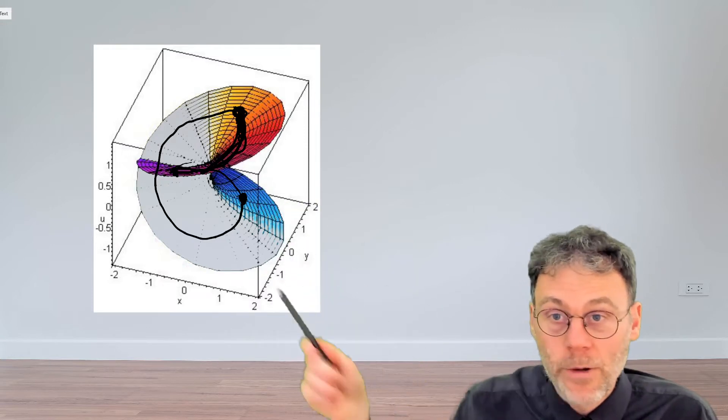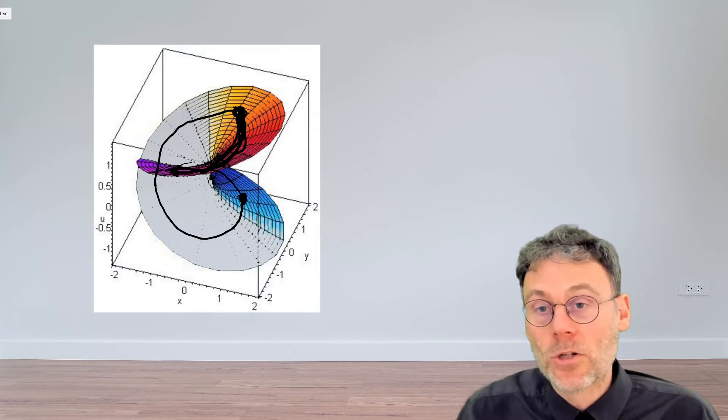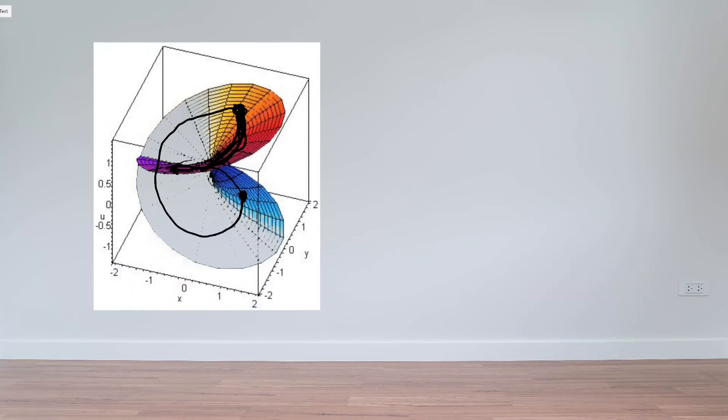So this Riemann surface, very interesting topological structure, intersects itself in such a way that you need two round trips in order to get back to where you started from.